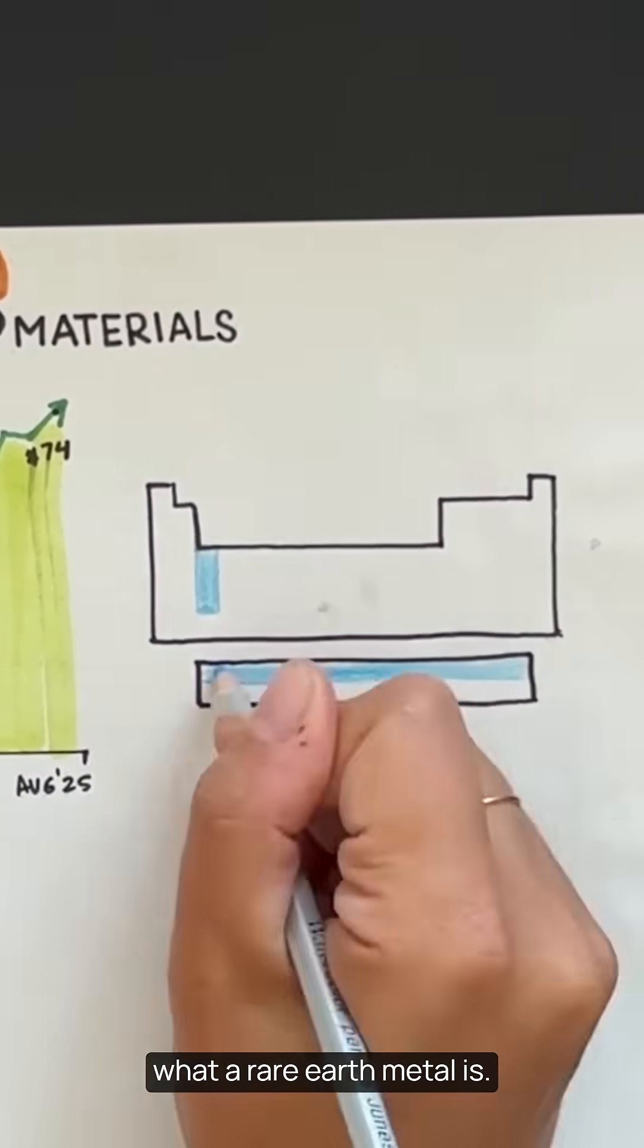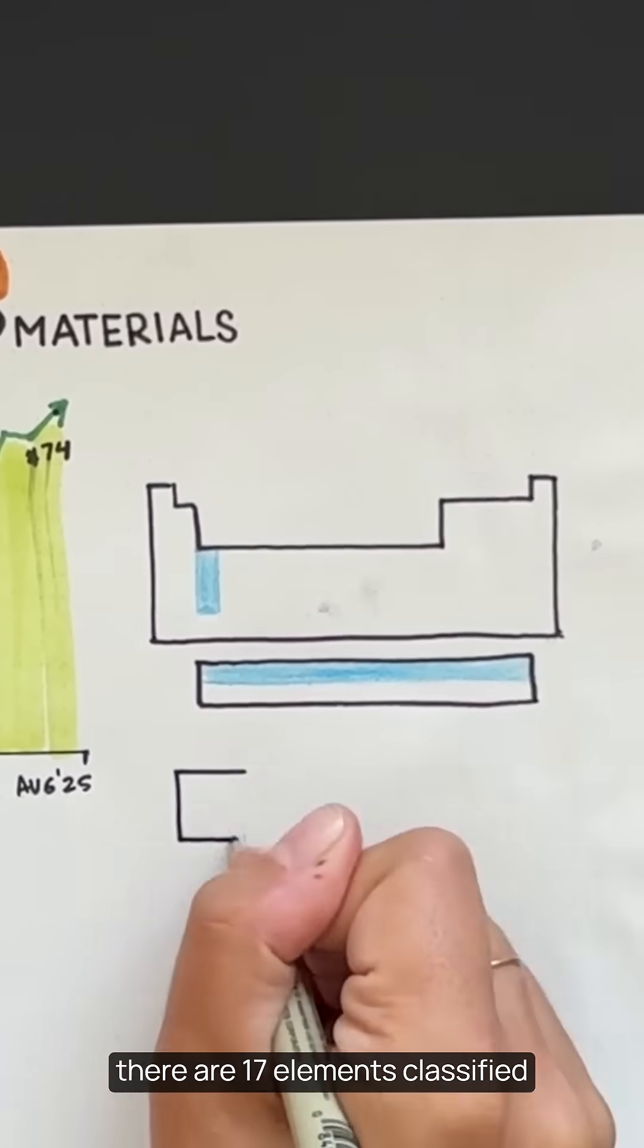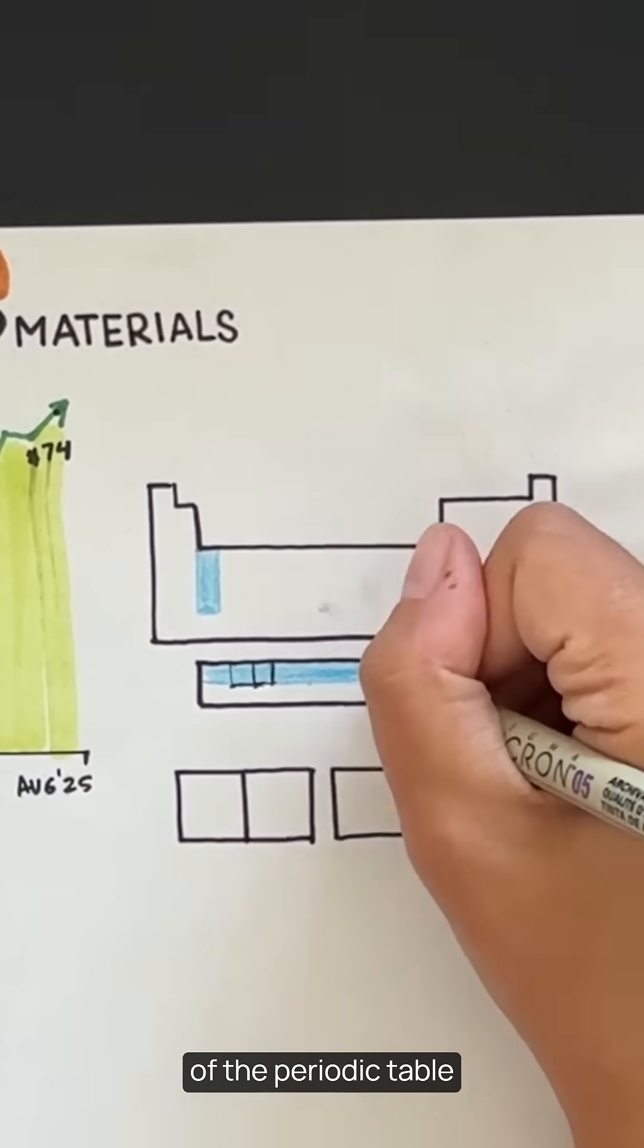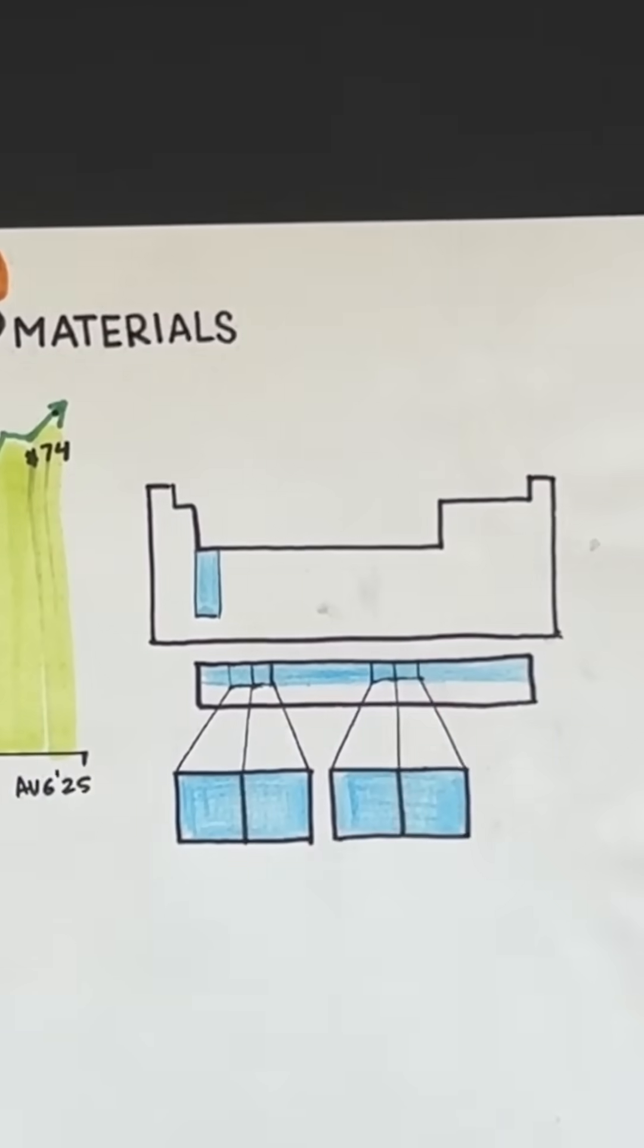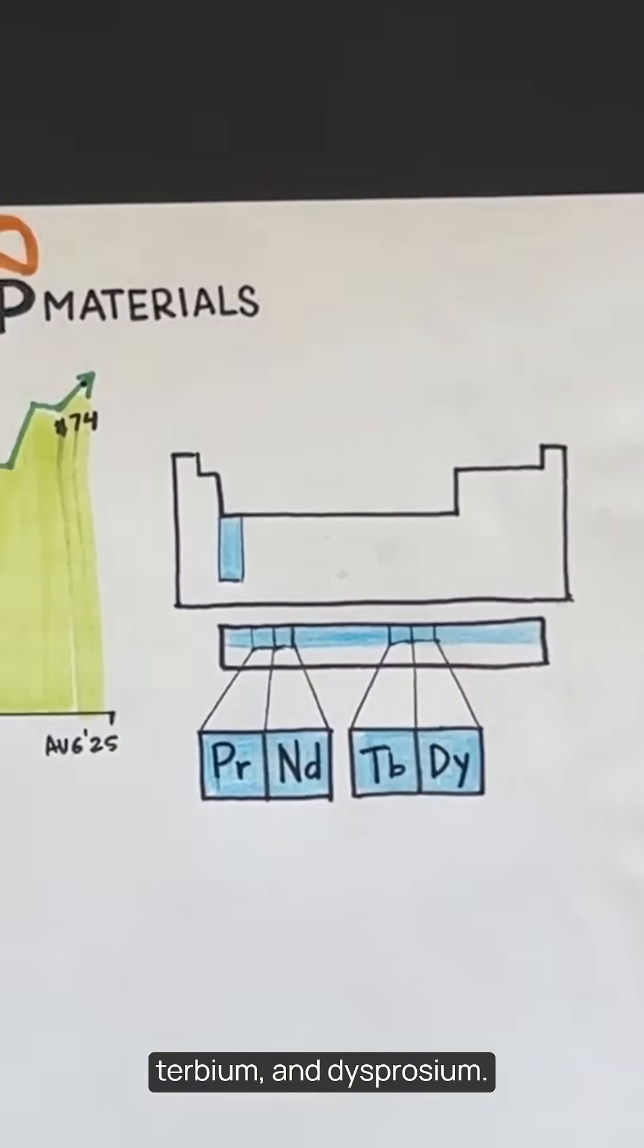First, let's understand what a rare earth metal is. In the periodic table, there are 17 elements classified as rare earth metals, mostly along the bottom row marked here in blue called lanthanides. Let's zoom in on four in particular: praseodymium, neodymium, terbium, and dysprosium.